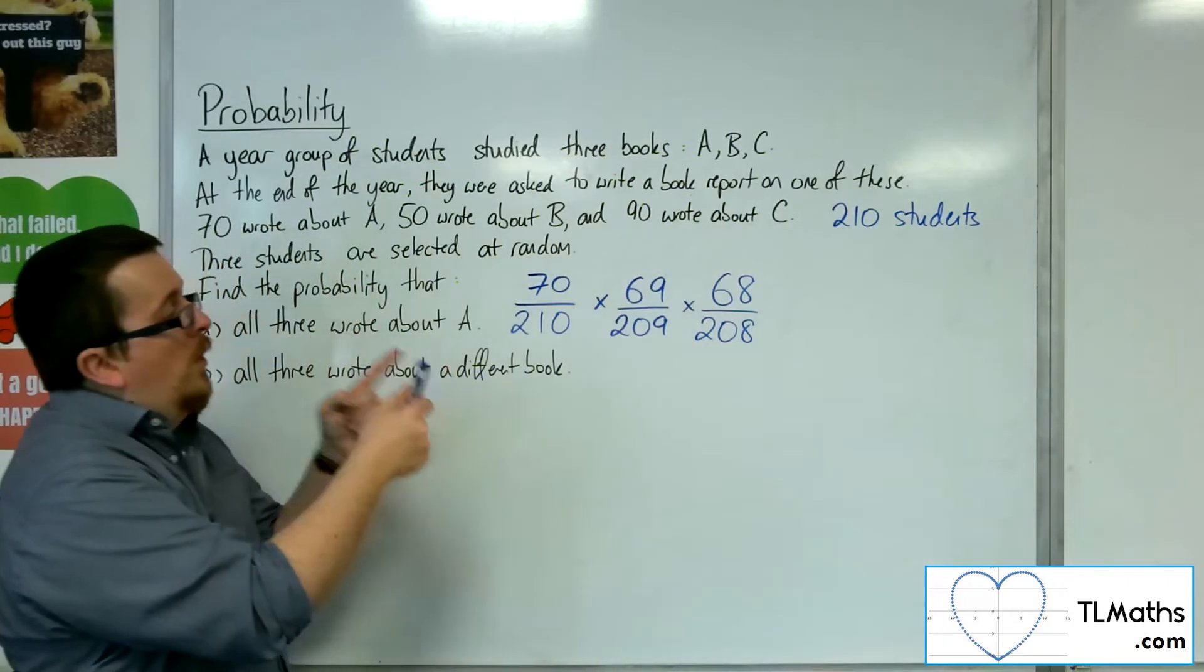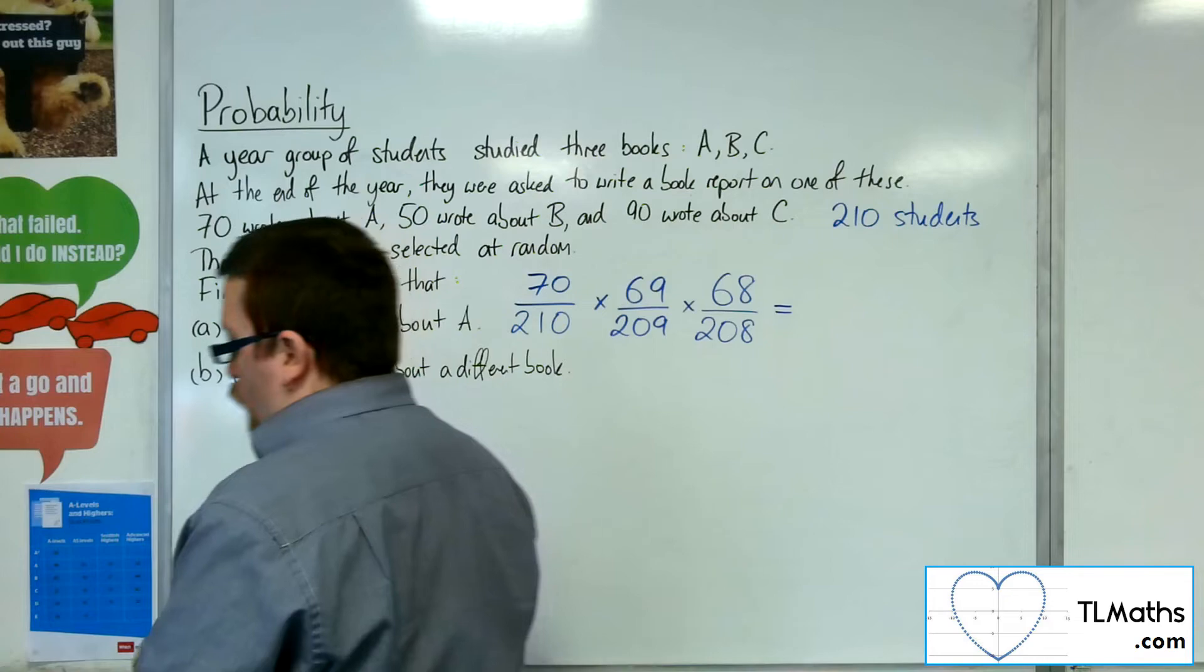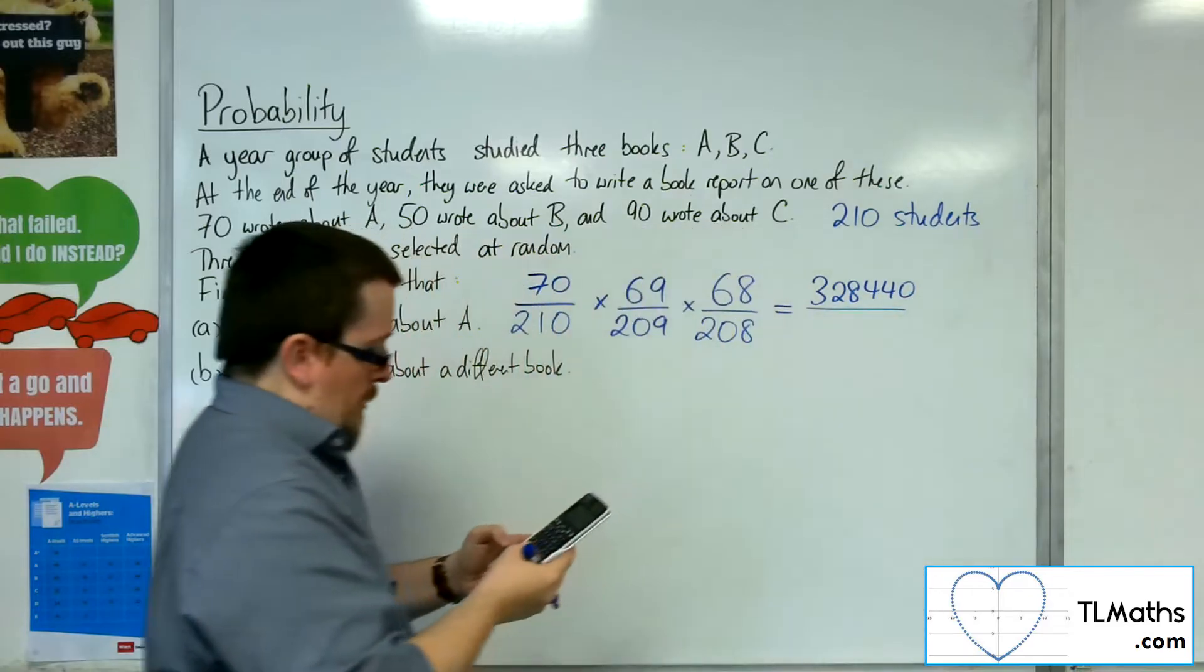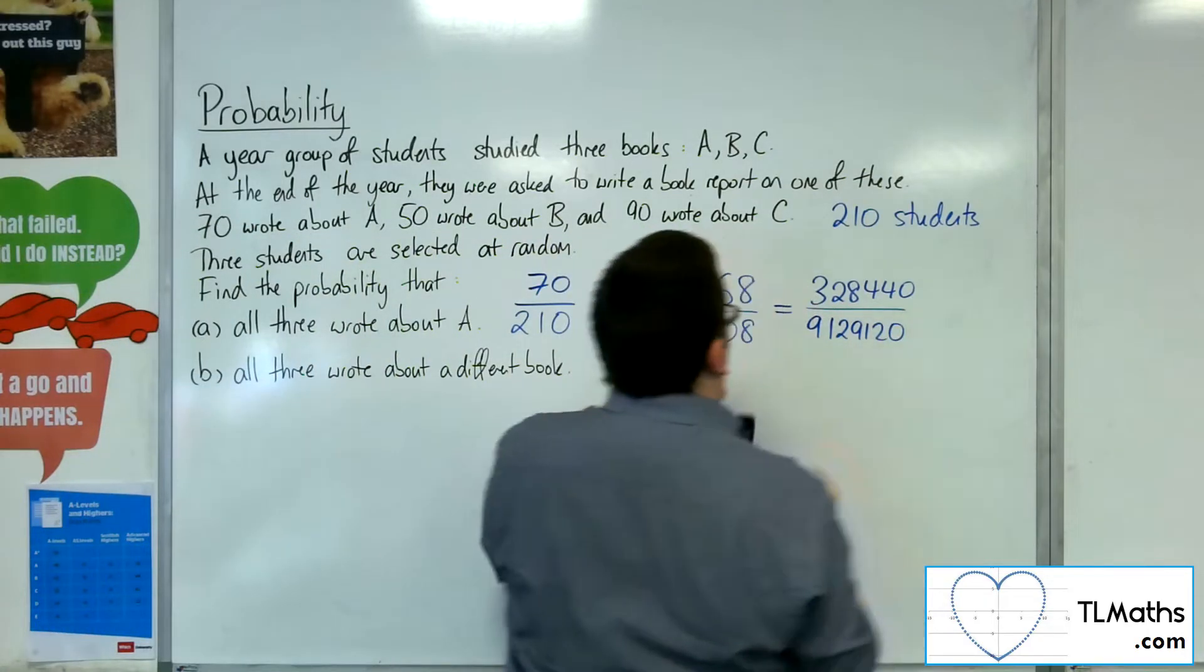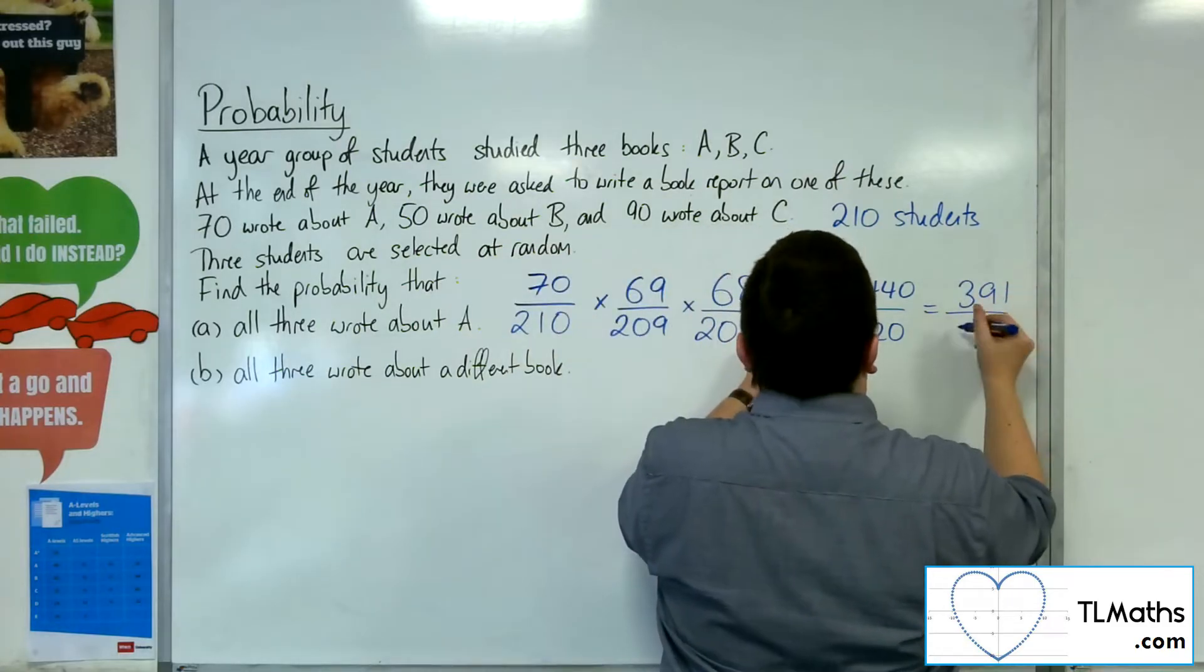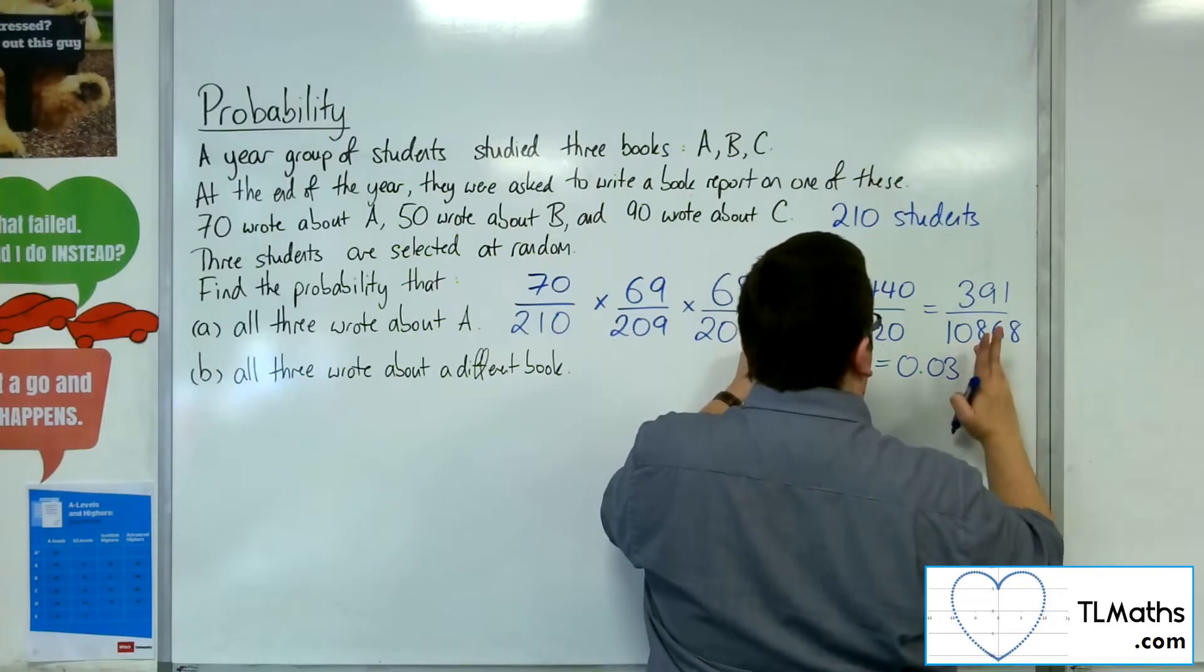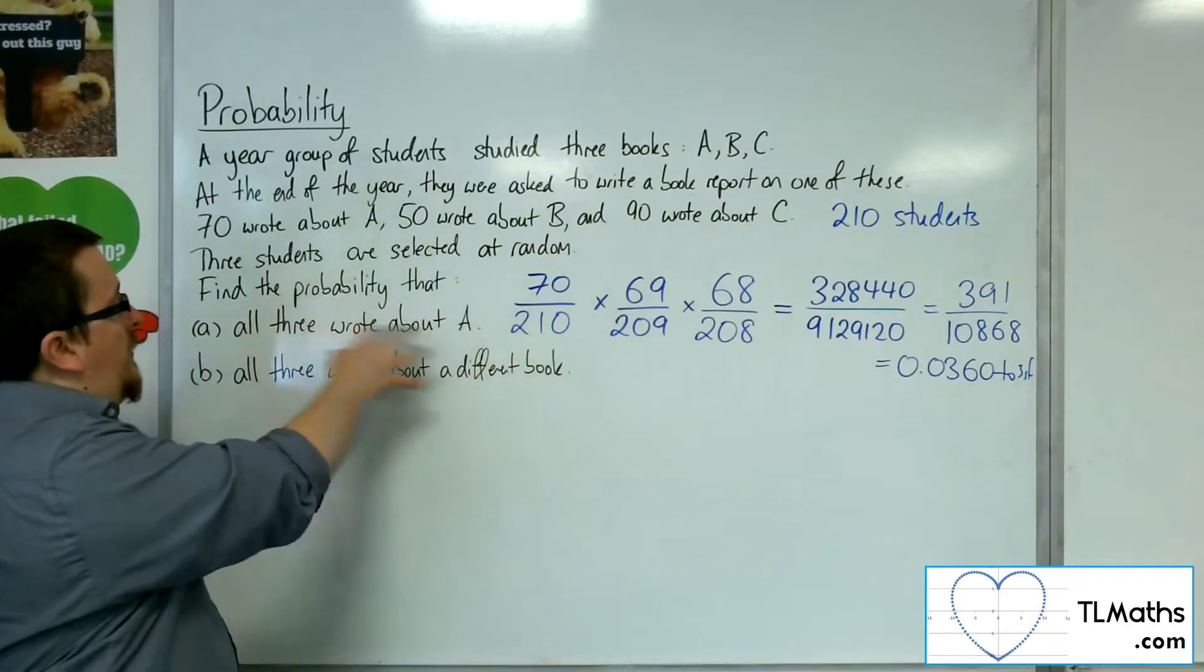This is the probability of picking out those three students who all wrote about book A. So we'd have 70 times 69 times 68, which is 328,440 over 210 times 209 times 208, which is 9,129,120. That simplifies down to 391 out of 10,868, which equals 0.0360 to 3 significant figures. That is the answer to the first one.